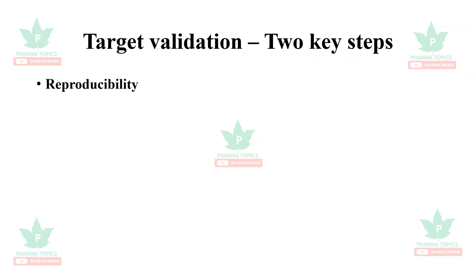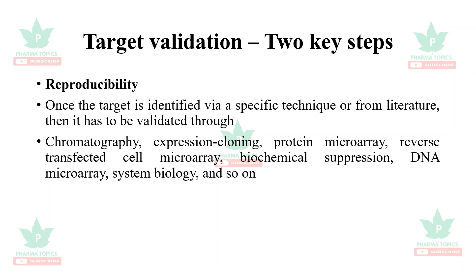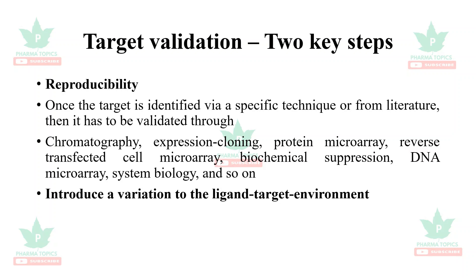The first key step is reproducibility. Whenever a target has been validated and is checked again, it has to reproduce the same results. Once the target has been identified via a specific technique or from the literature, it can be validated through different techniques such as chromatography, expression cloning, protein microarray, reverse transfected cell microarray, biochemical suppression, DNA microarray, systems biology, and so on. Reproducibility of the validated target is most important so that the target can be used to identify newer molecules.